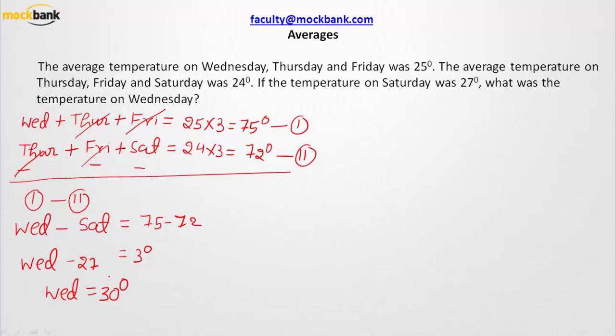Try to understand what I'm saying: the average temperature on Thursday, Friday, and Saturday is one less than the average temperature on Wednesday, Thursday, and Friday. What we have in common is Wednesday and Saturday. So the temperature of Wednesday is going to be 3 more than the temperature on Saturday. If the temperature on Saturday is 27 degrees, the temperature on Wednesday is nothing but 30 degrees. We don't even have to solve this problem — you can go with either this shortcut approach or the equation approach.